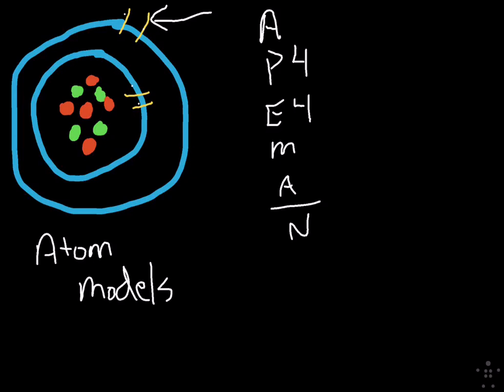Four electrons means there's four protons, because in eighth grade, the protons and electrons equal each other with stable atoms.